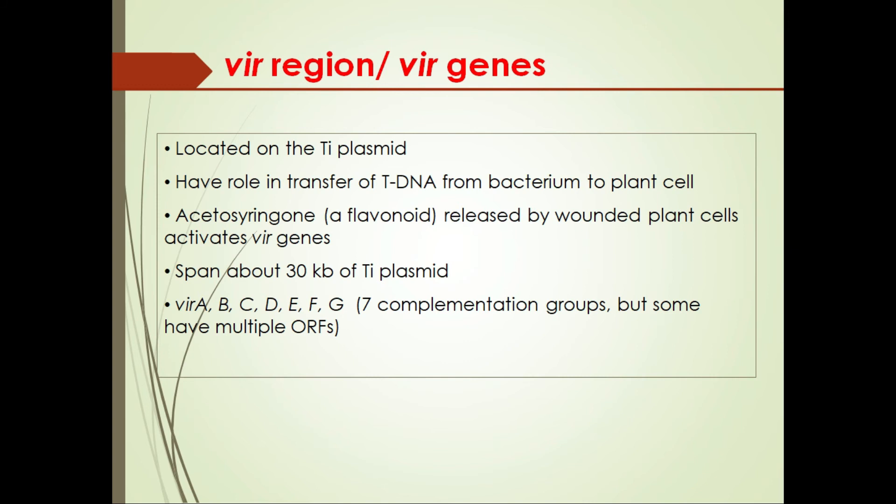Other important regions of the Ti plasmid include the VIR or virulence region, which contains virulence-related genes with roles in transferring T-DNA from the bacterium to the plant cell. Acetosyringone, a flavonoid released by wounded plant cells, activates the virulence genes in the Ti plasmid. These vir genes span about 30 kilobases of the Ti plasmid and are organized into seven complementation groups: virA, virB, virC, virD, virE, virF, and virG, with some having multiple ORFs.